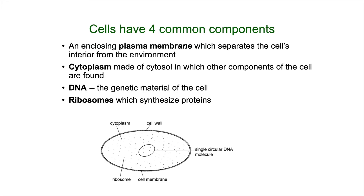When we think about cells, there are four common components that all cells have. A plasma membrane, which is really important because we need to separate the inside of the cell from the external environment. Inside the cell there's cytoplasm, which is mostly liquid cytosol — mostly water. Within that is the DNA, which is the genetic material of the cell — this is how we code for proteins that allow the cell to respond to the environment, and the information we pass on to offspring. Finally, ribosomes make proteins, the workhorses of the cell. These are the four things all cells are going to have.